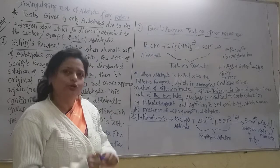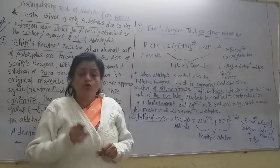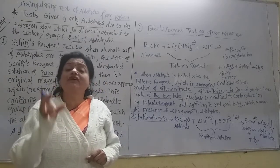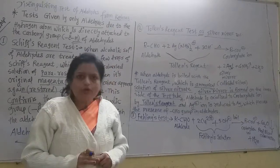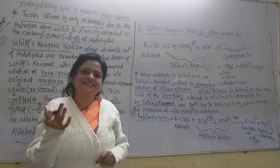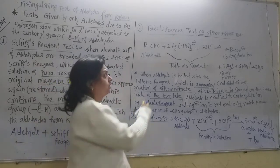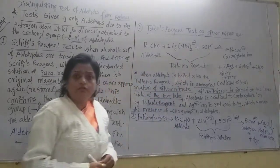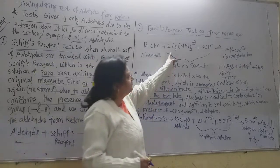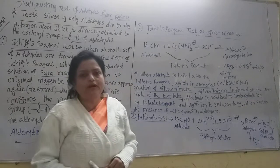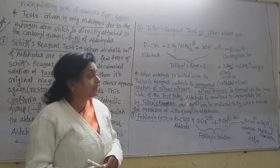Tollens' reagent is a complex compound. A complex compound means there are two types of valency attached to the positive metal ion — one is the primary valency and another is the secondary valency, shown in square brackets. Two molecules of ammonia are the secondary valency of silver, and the three hydroxide ions are the primary valency of silver.